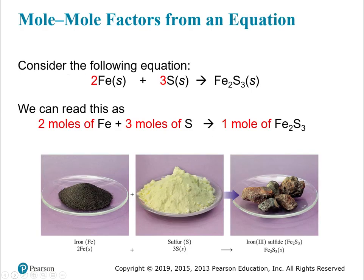When we consider this equation, we've got iron, we've got sulfur, and we're creating iron(III) sulfide. You can read it as not just 2 and 3, but 2 moles of iron and 3 moles of sulfur making 1 mole of iron(III) sulfide. If we know moles, we can do math to figure out mass — and that's where we're going.